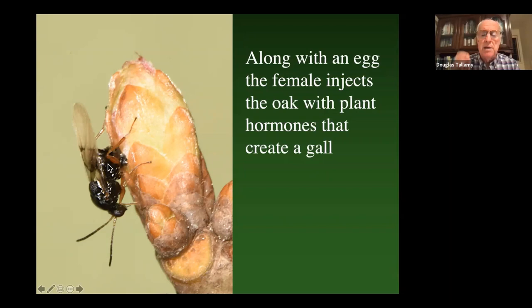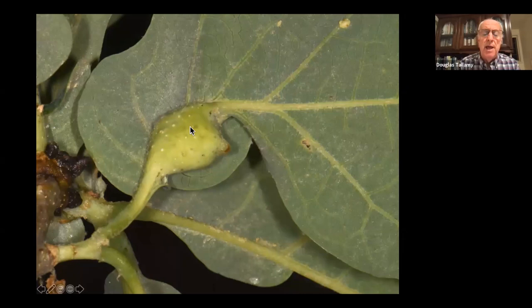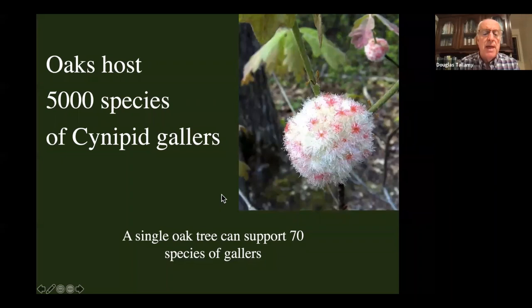Here's a female gall wasp laying in one of the buds of my trees this past spring, and that's the gall that resulted. There are 5,000 species of cynipid gallers worldwide on oaks, and a single oak tree can support 70 species. They can be quite pretty.